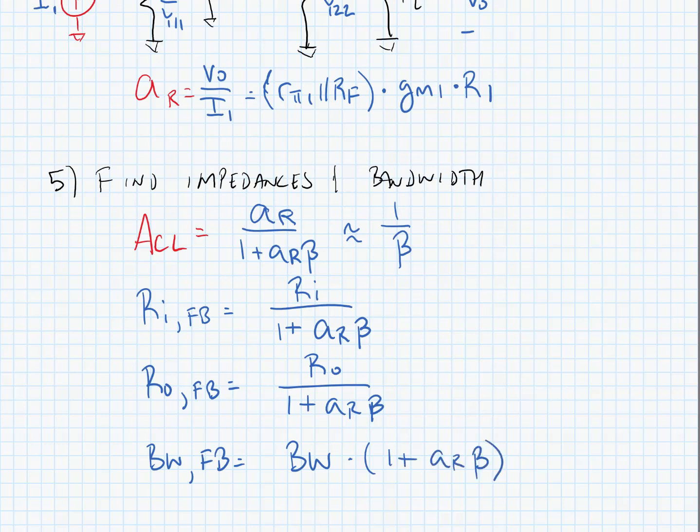When we're finding input resistance, output resistance, and bandwidth, we use the techniques we've used throughout this course. We find input resistance using inspection analysis - place a voltage source and measure the current that flows through it. Same for output resistance. For bandwidth, we use open-loop time circuit analysis.